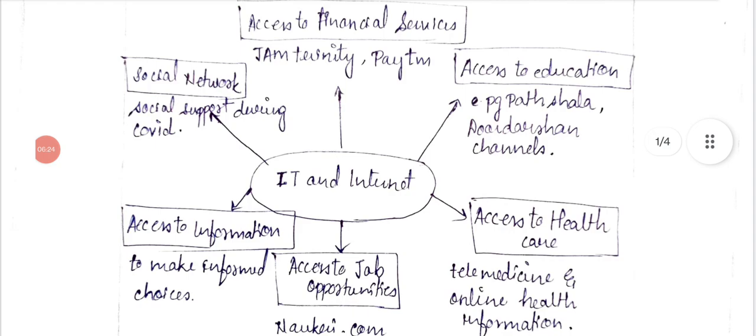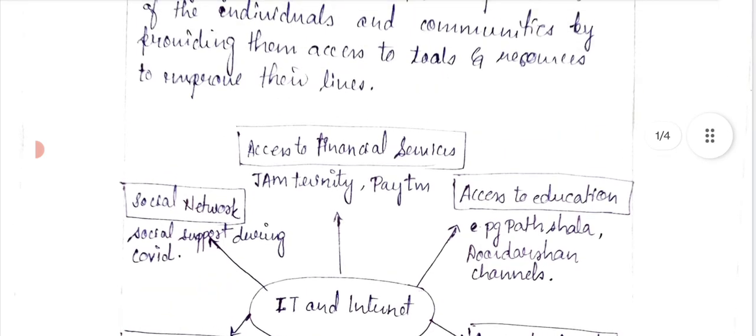The next point is social networking. Mark Zuckerberg created Facebook, now renamed Meta, and also acquired WhatsApp. This has been a revolution — practically the entire country runs on WhatsApp. Even government communication relies heavily on it. So isn't this empowerment?